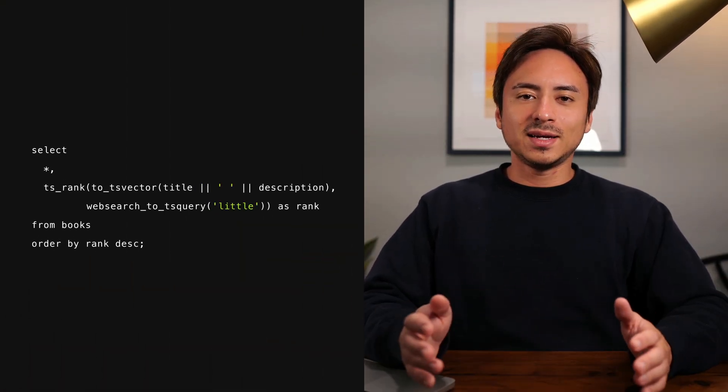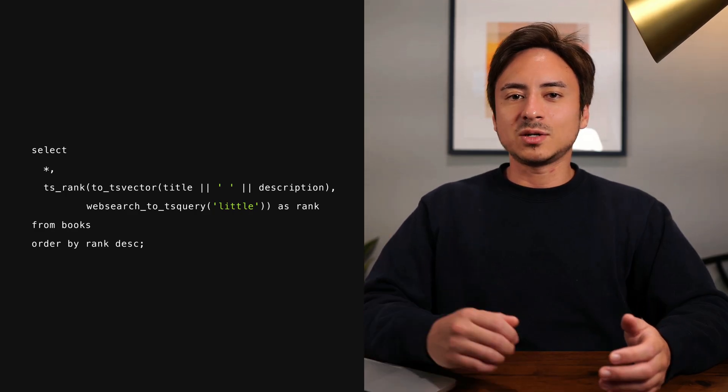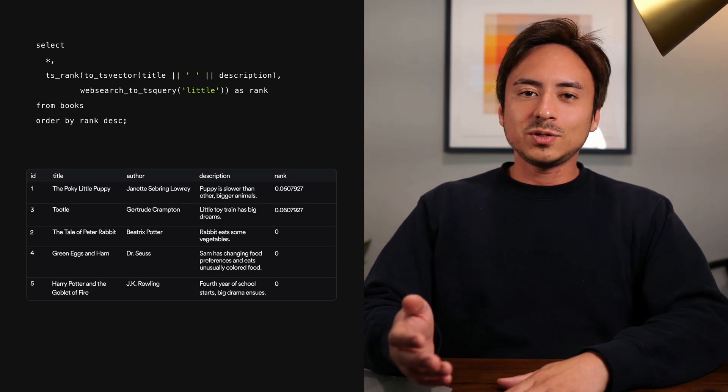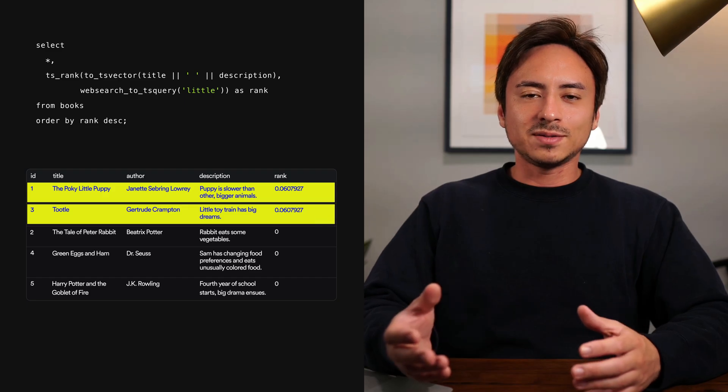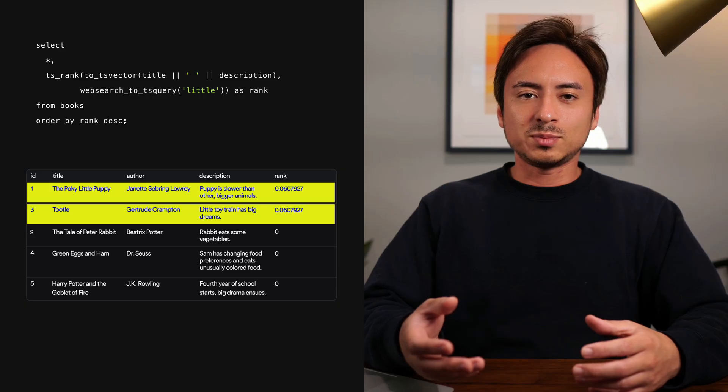Let's keep on refining our search feature. So far, we've been searching across the title and description column for a certain keyword, but we never ranked the search results — which is a common feature to have in any text search. Certain search results are going to be more relevant than others. There's a function called ts_rank, which calculates how relevant a document is with the given tsquery. We can see there are two search results with non-zero rank values, because both contain the keyword 'little' either in the title or the description.